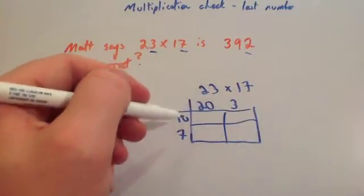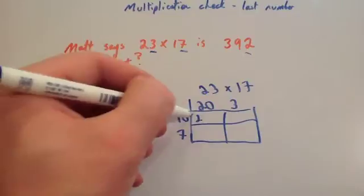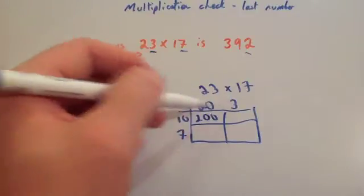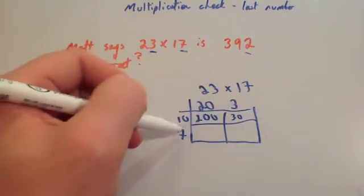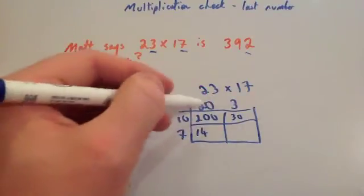10 times 20, 1 times 2 is 2, add on your two zeros. 1 times 3, 10 times 3 is 30. 7 times 20, 7 times 2 is 14, add on your zero.